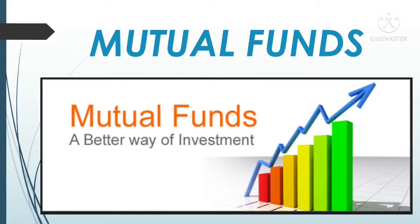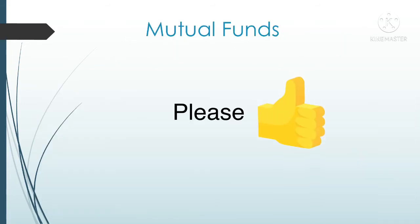A mutual fund manager can give good returns of around 12% to 20% per annum. Other investment tools like the National Pension Scheme, fixed deposits, recurring deposits, and the Sukanya scheme give returns of less than 10% only. Only mutual funds give returns from 12% to 20%, which is why mutual funds are considered a better way of investment than other investment tools.